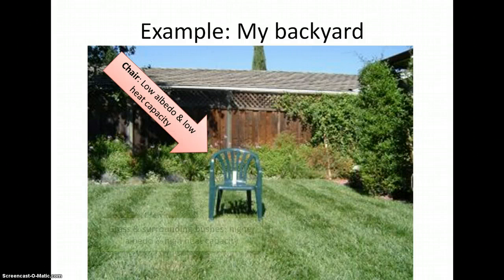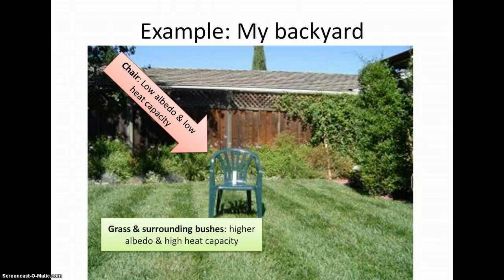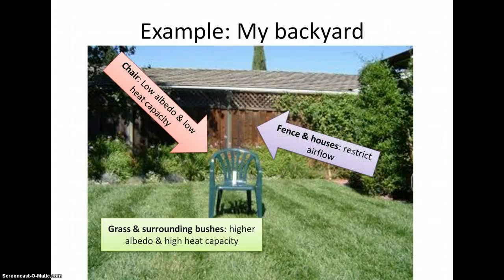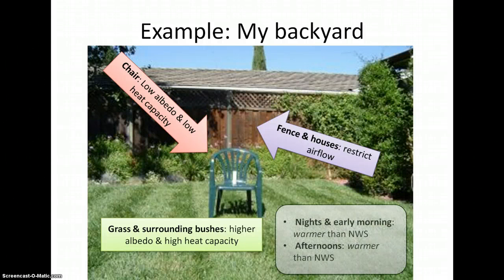The grass and surrounding vegetation has a lot of water in it, so it will keep things at a more moderate temperature. However, the wooden fence and the house that enclose the backyard restrict air flow. So the result of all this is that at night and in the early mornings, I would expect the temperature in my backyard to be warmer than the National Weather Service because of the vegetation and the restricted air flow.